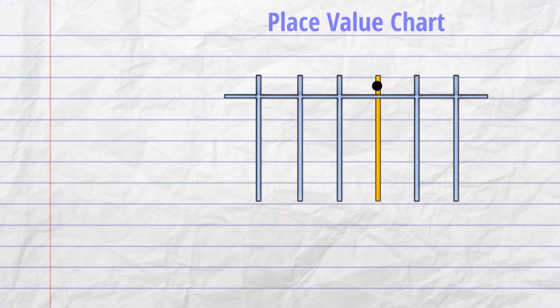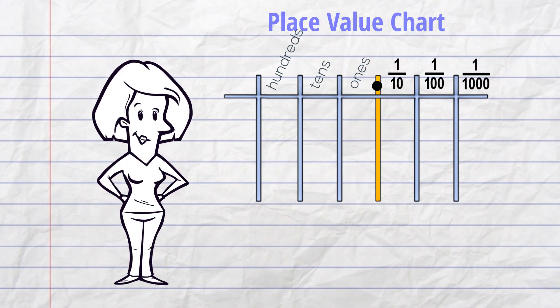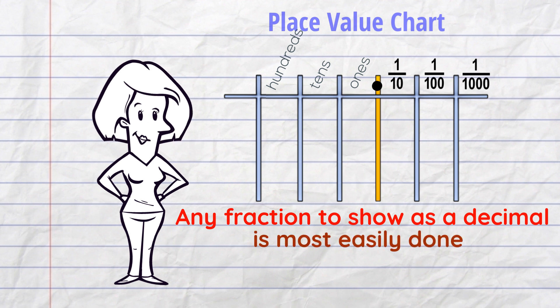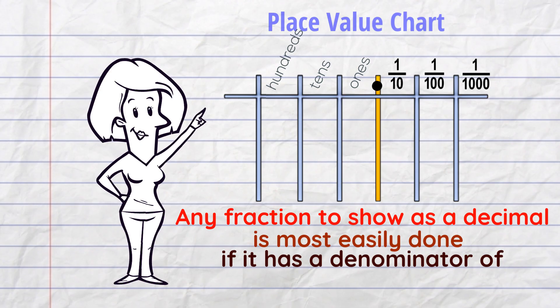Let's bring up a place value chart to help us. Look at the fraction columns: tenths, hundredths and thousandths. Any fraction we have to show as a decimal is most easily done if it has a denominator of 10,